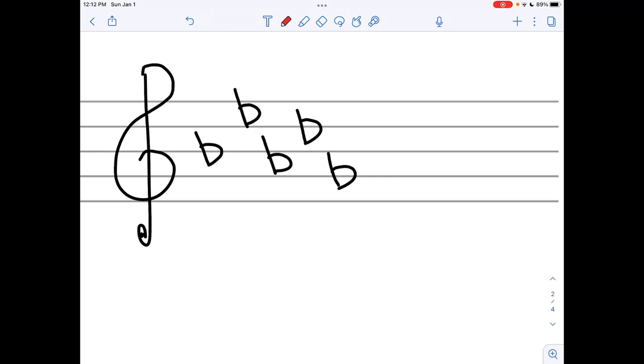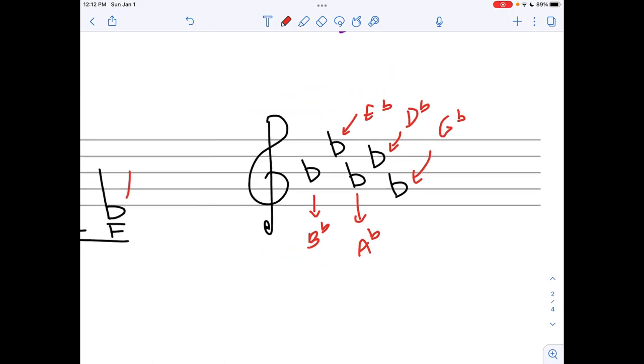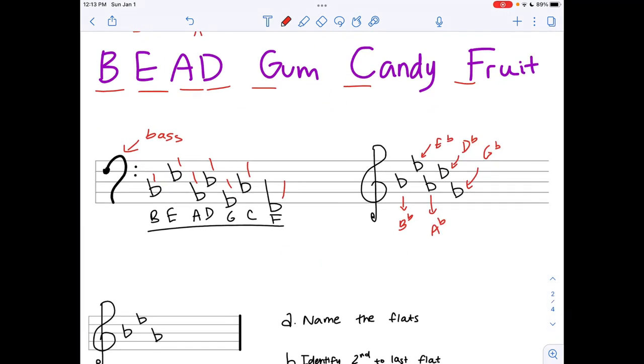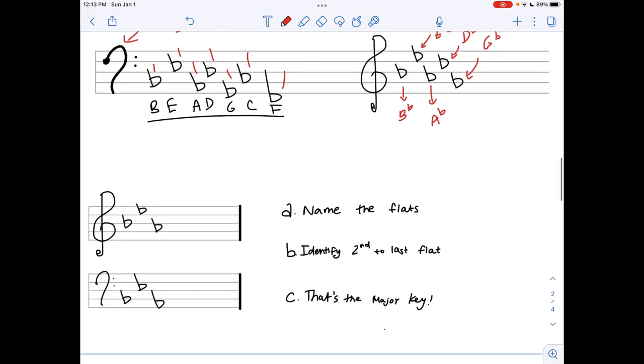this time it's in treble clef. Let's try to see which flats we have in our key signature using our acronym. I have BEAD and the G, so we have B flat, E flat, A flat, D flat, and G flat. But how am I supposed to get from just a bunch of flats in my key signature to actually identifying the key that it's in?